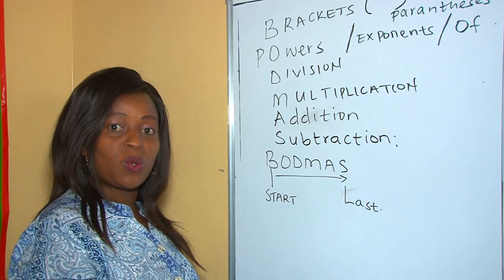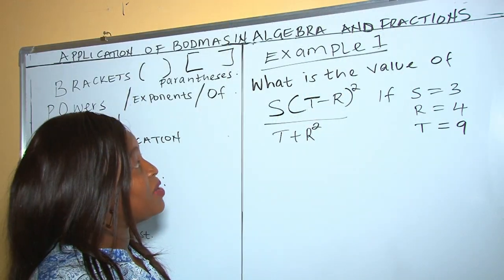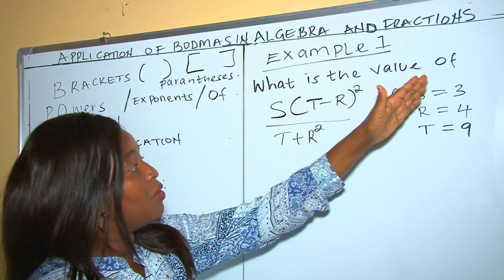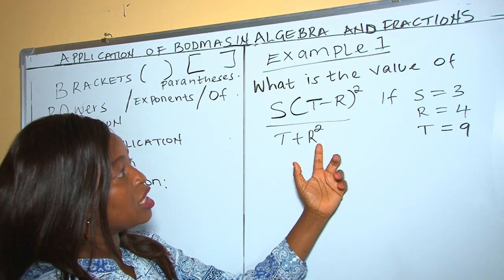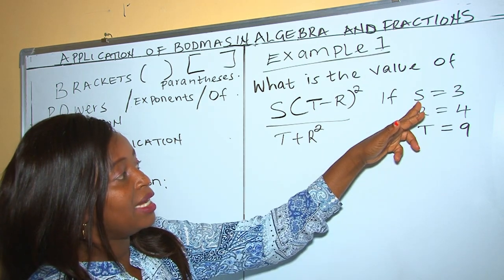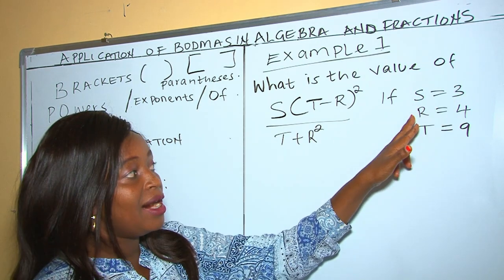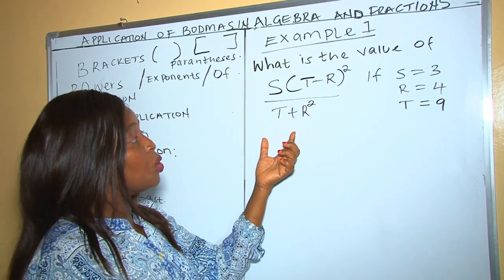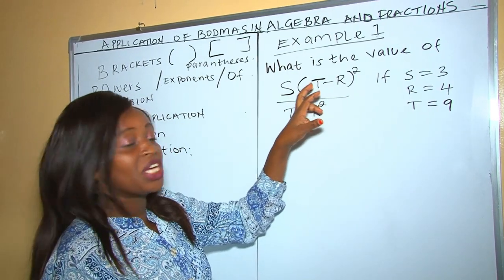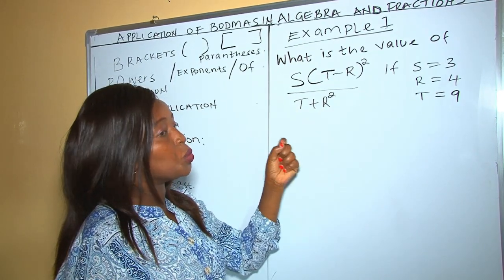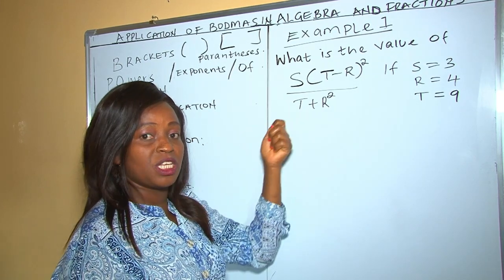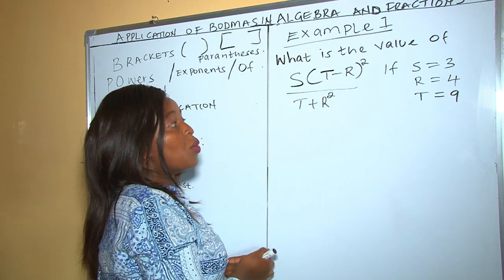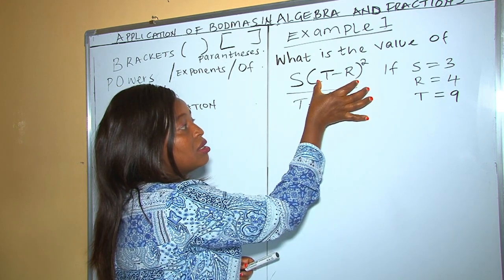Let's look at one algebraic example to see how to work it out. Given a question of this nature, what is the value of the expression if s equals 3, r equals 4, and t equals 9? Although it's algebraic, because it has more than one operation, we are supposed to use BODMAS in solving this question.